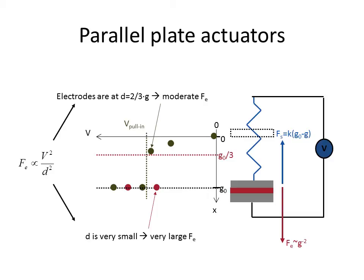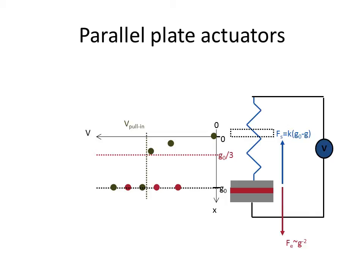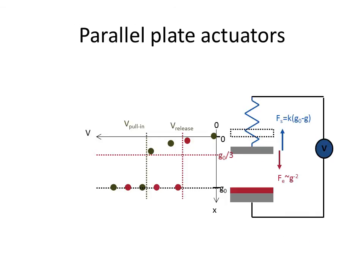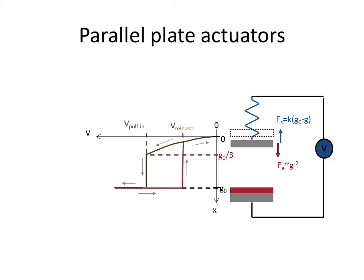So I'll have to decrease it even further and I will have to decrease that value to the value just below the spring force. So then I have a release. So I have a pull-in and a release voltage and now I can further decrease and I see that my electrode will go back to its original state.